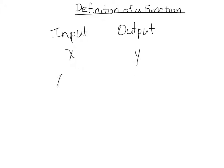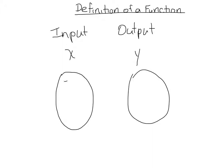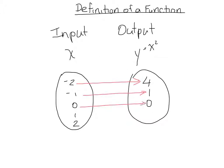For example, if I have a bunch of x values here and a bunch of y values here — let's say my x values are negative 2, negative 1, 0, 1, and 2, and my function is x squared — then my y values would be 4, 1, and 0. Negative 2 would go to 4, negative 1 would go to 1, 0 would go to 0, 1 would also go to 1, and 2 would also go to 4.